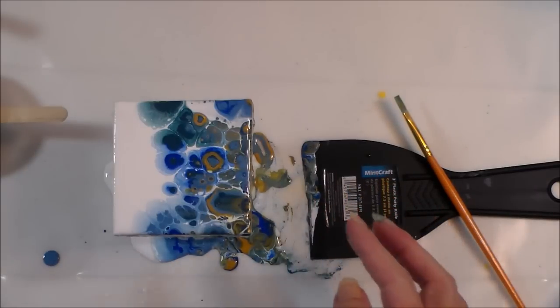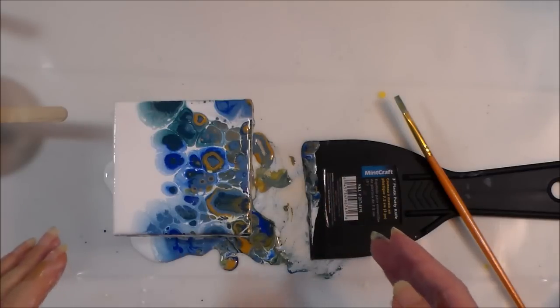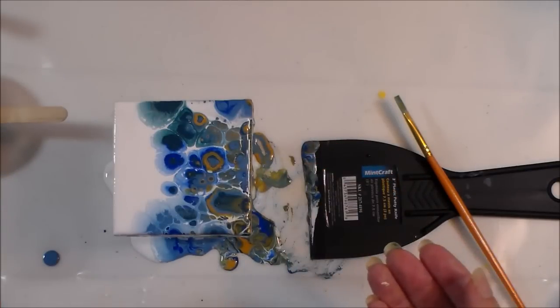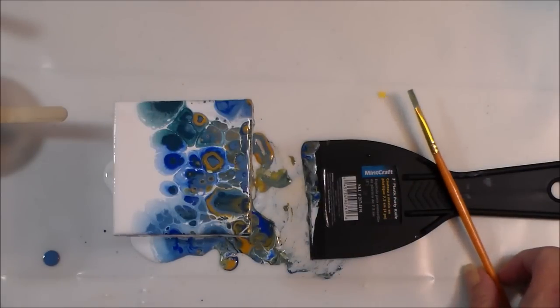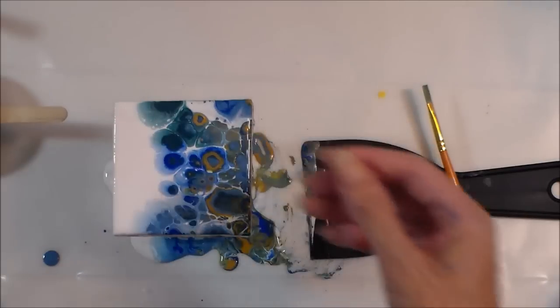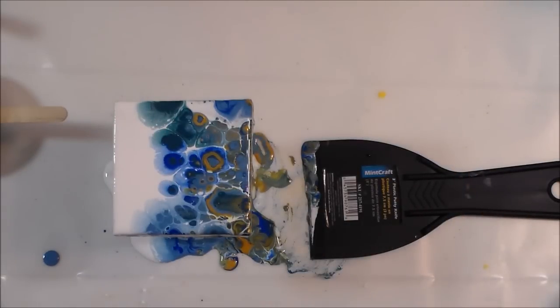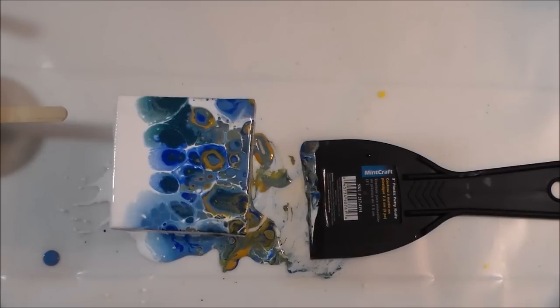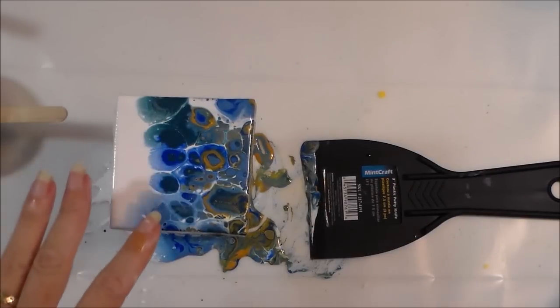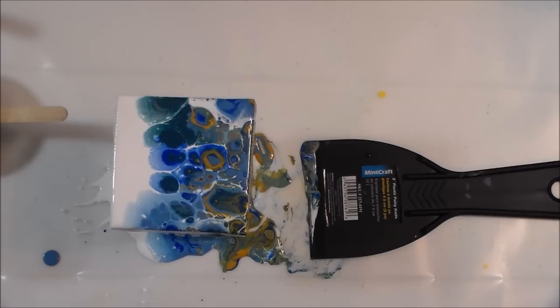For this one, we've got similar sized cells to what I had on the other canvas. They're quite large. On the other canvas that was good because it's a large canvas. On this one, I'm wondering whether I should torch it a little bit just to get smaller cells through. But I think I'll leave it a little while and just see what develops. So I've given it a couple of minutes and a few little bits and pieces have developed, but mostly it's the larger cells. And I think because it's a tiny canvas, I would like to get some tiny cells if I can. So I'm going to turn my torch on and let's see what happens.